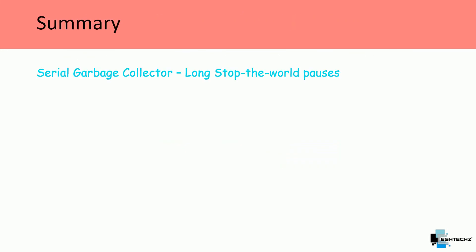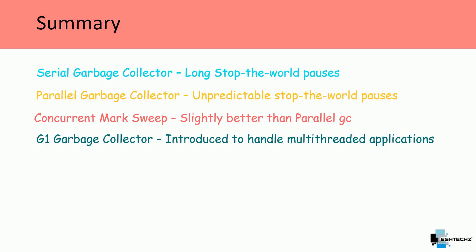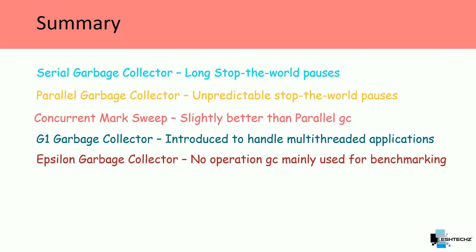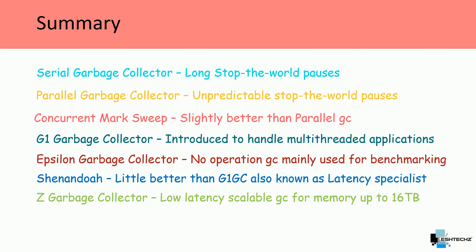In summary, the garbage collectors covered are: Serial GC — long stop-the-world pauses; Parallel GC — unpredictable stop-the-world pauses; Concurrent Mark Sweep — slight improvement over Parallel GC; G1GC — introduced to handle multi-threaded applications with large heaps; Epsilon GC — a no-operation GC mainly used for benchmarking; Shenandoah — better than G1GC, known as latency specialist; and ZGC — a low-latency, scalable GC supporting heap sizes up to 16 terabytes.